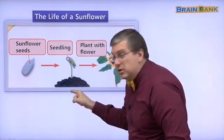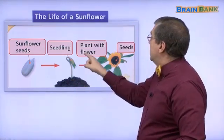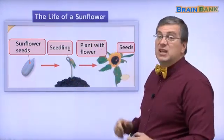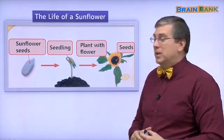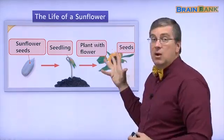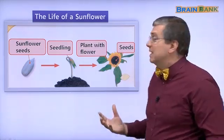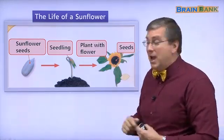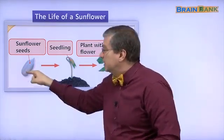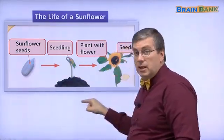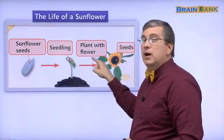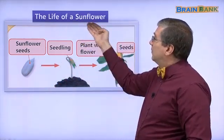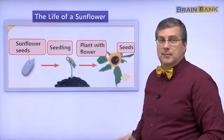A seedling is like a baby plant, it's just starting to grow. Where is the seed? The seed is under the ground. Then it becomes a plant with flower - it's an adult plant. And it has a flower. Where are the seeds? The seeds are inside the flower, and it starts again. This is the life cycle of a plant, the life of a sunflower.